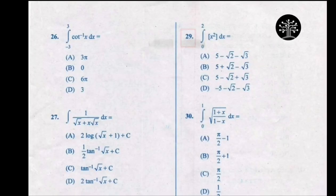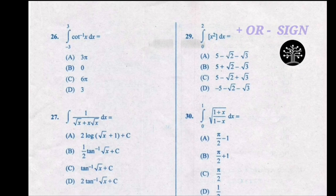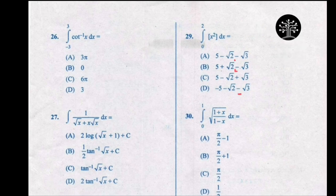In this question, the probability of the correct option being option A or option C — both are having a similar start. Now to decide the correct answer, whether plus sign or minus sign, we take the help of other options. The minus sign is repeated more across the options, therefore the correct answer will be option A.